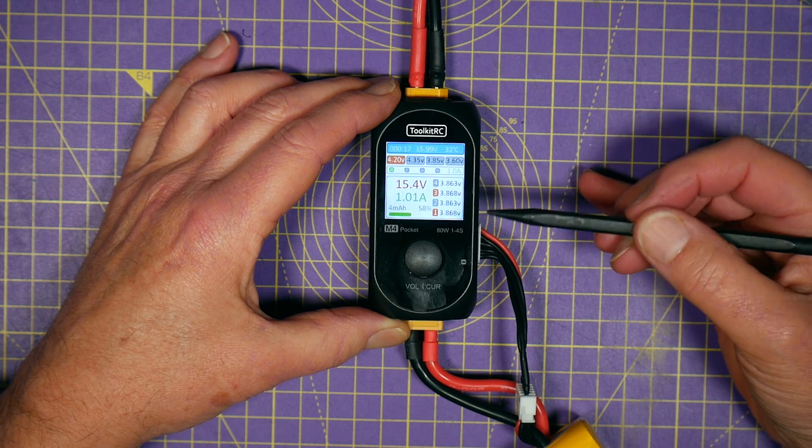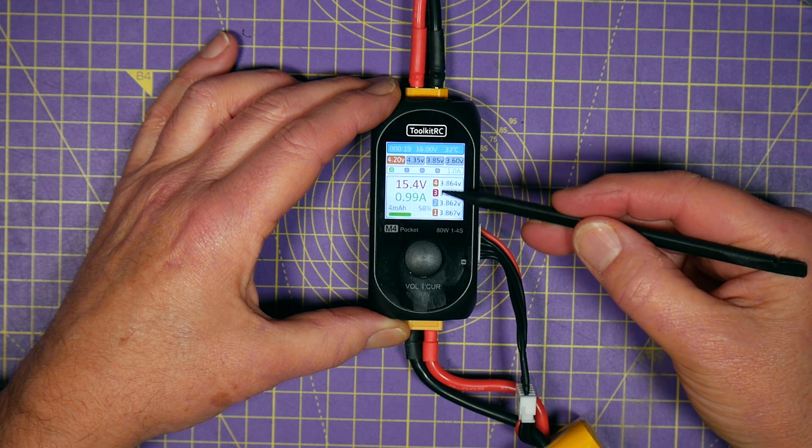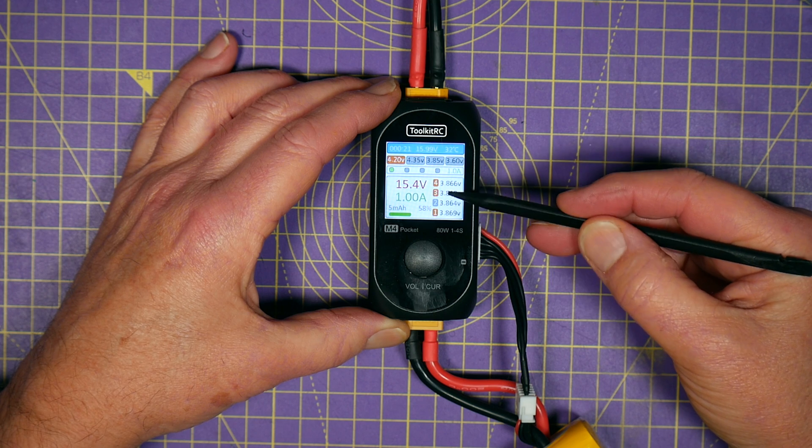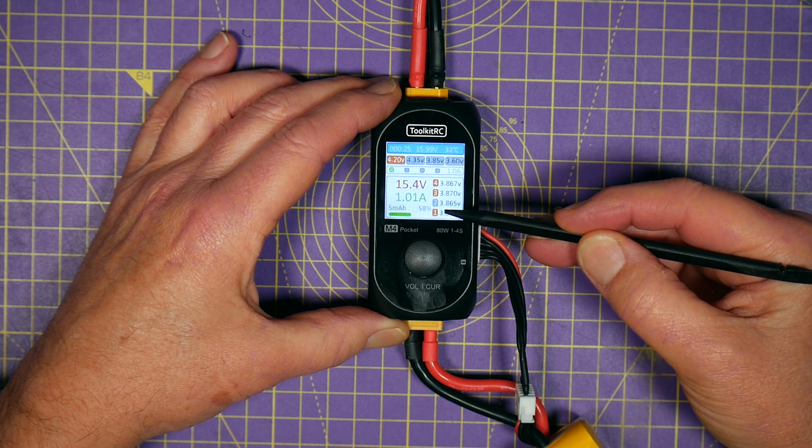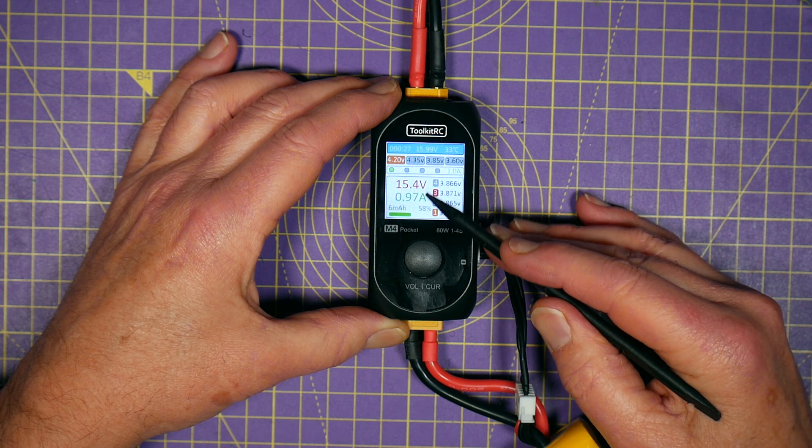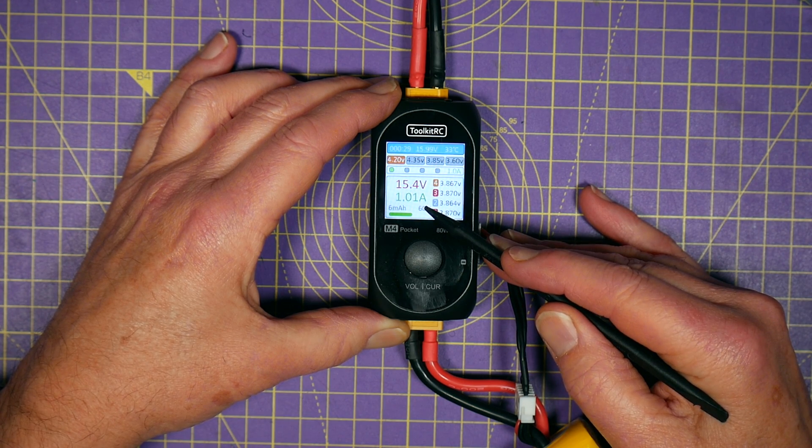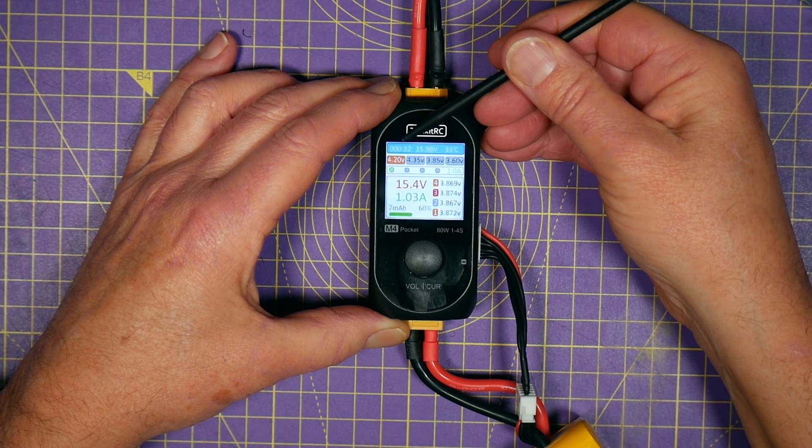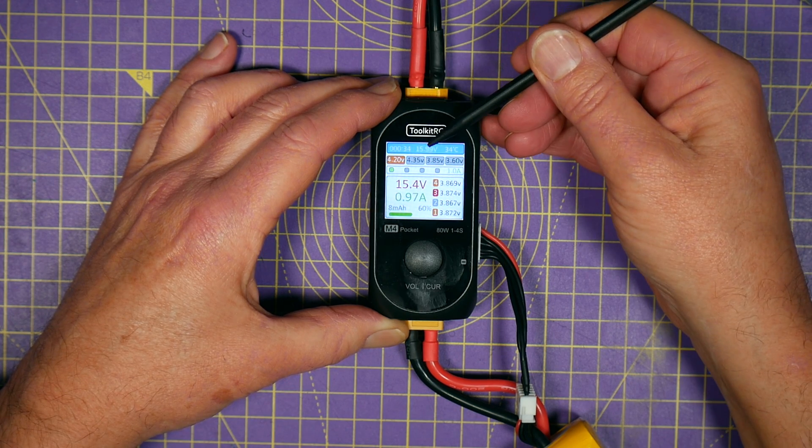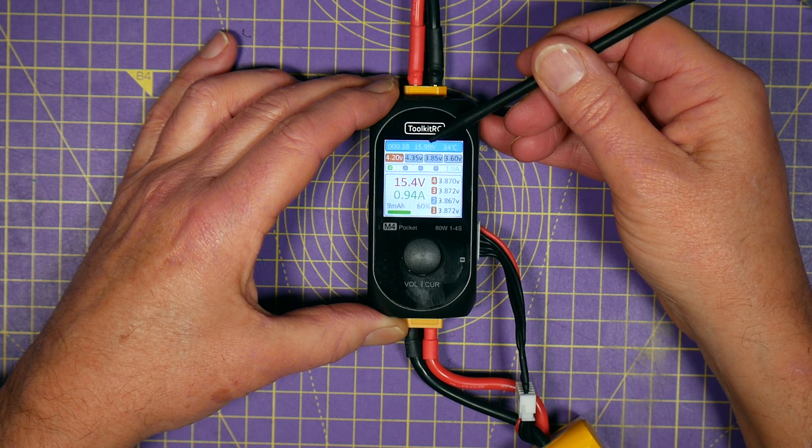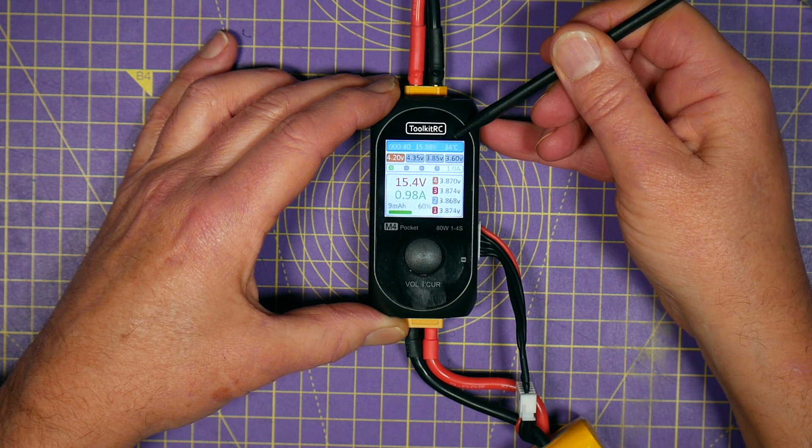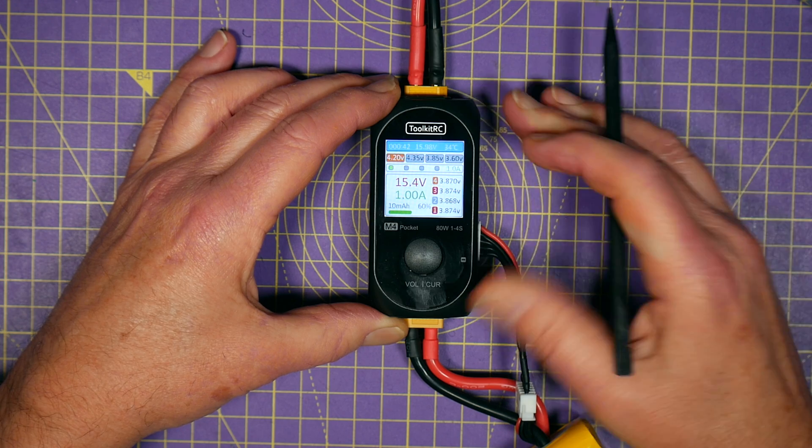The display shows the balance circuit working here flashing amber and red. These are all around 3.8. It just shows you that working. And the main voltage and current are shown here in red and green. And along the top bar here you've got the charge time, the input voltage, what's that, 15.8? 15.98? And the temperature, the internal temperature of the charger.